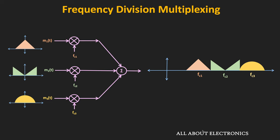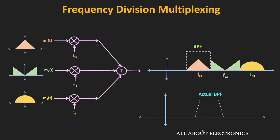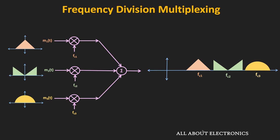The carrier frequencies of each message signal should be such that there is no overlapping region between the two message signals. If there is no overlapping, then at the receiver, using a bandpass filter, each message signal can be separated. Each bandpass filter is tuned to one particular carrier frequency and the bandwidth of the filter should be enough to pass the message signal. But actual filters have some gradual roll-off, and to accommodate this, there should be additional space between the two signals. So typically, some guard band is also kept between the two signals.